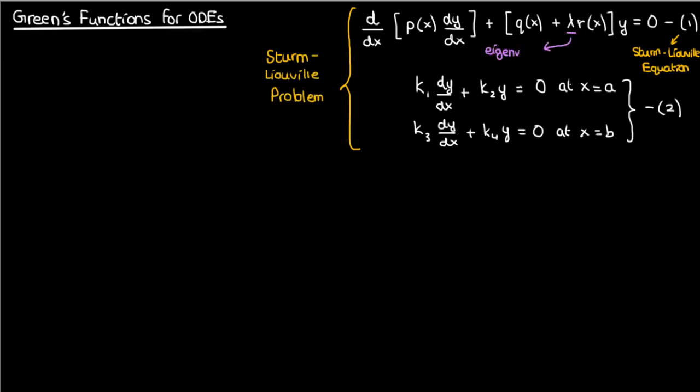Lambda, by the way, is called the eigenvalue and you can see that if you change the value of lambda you would end up with a different solution to the ODE or a different eigenfunction corresponding to that eigenvalue lambda.